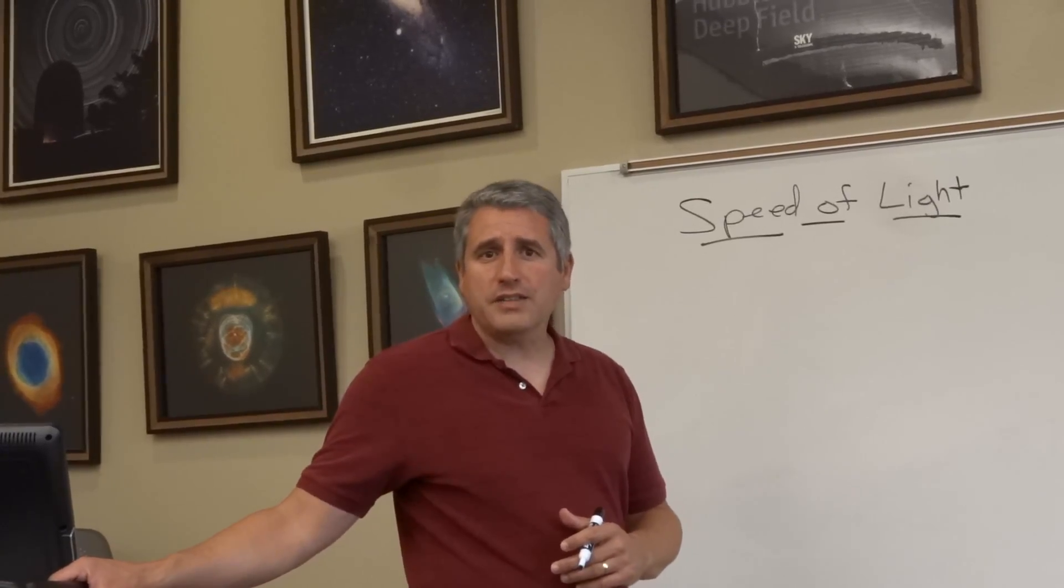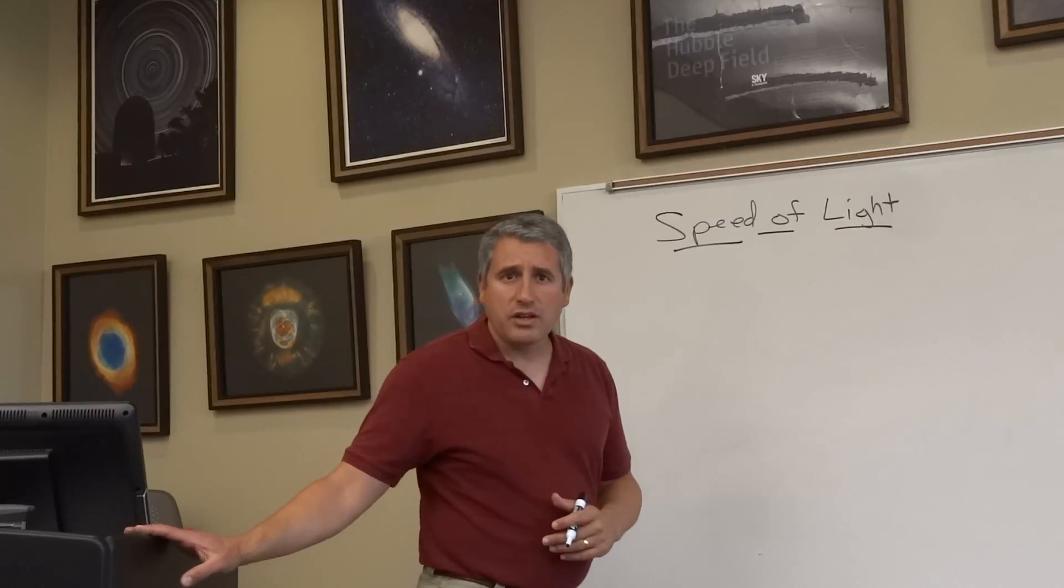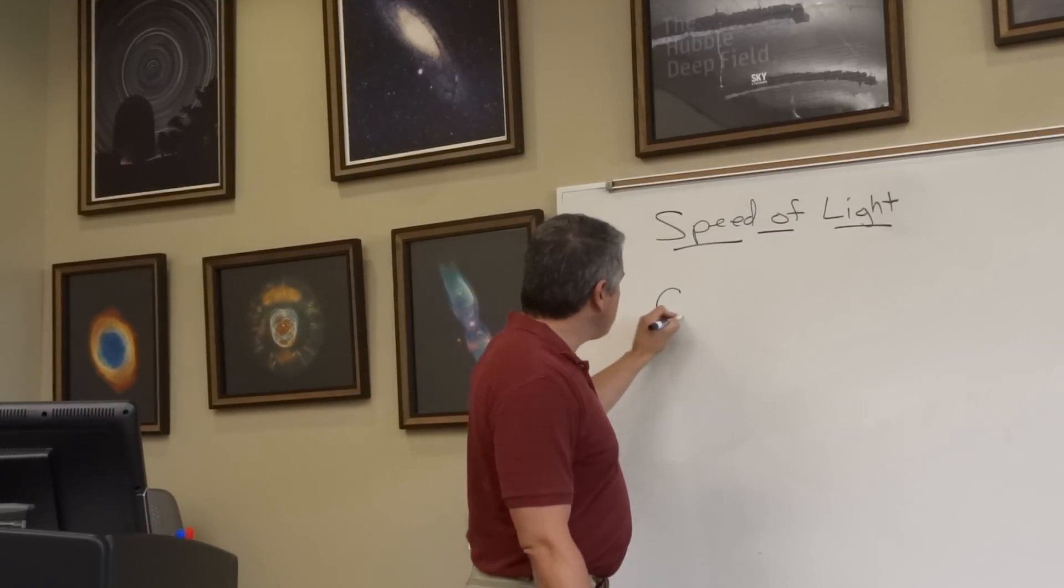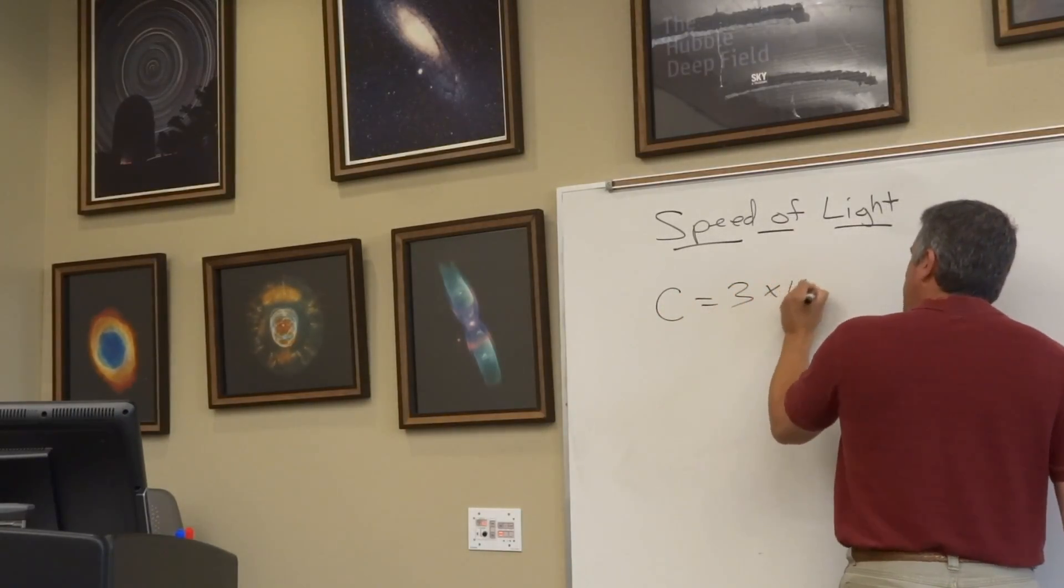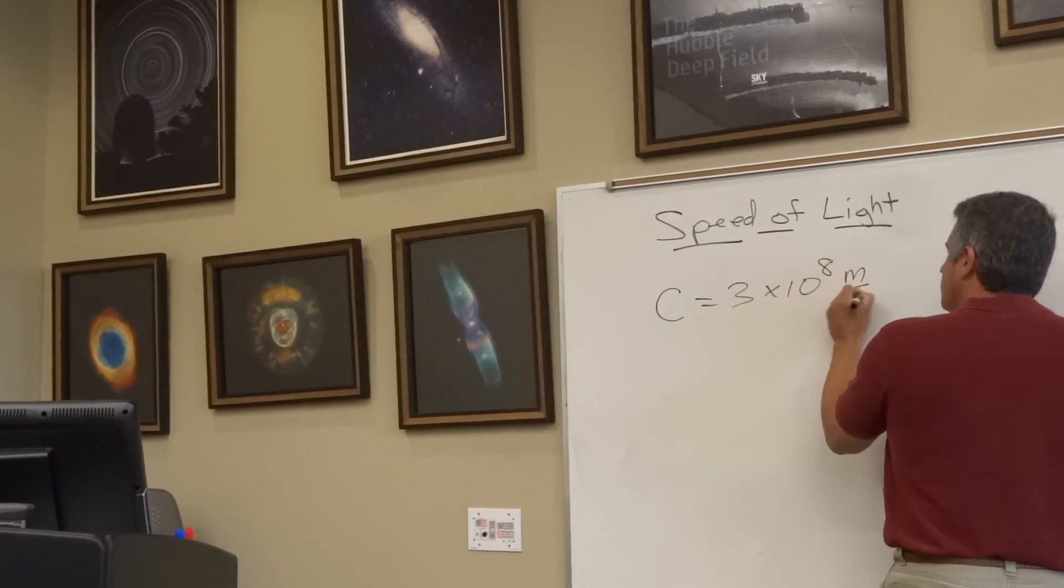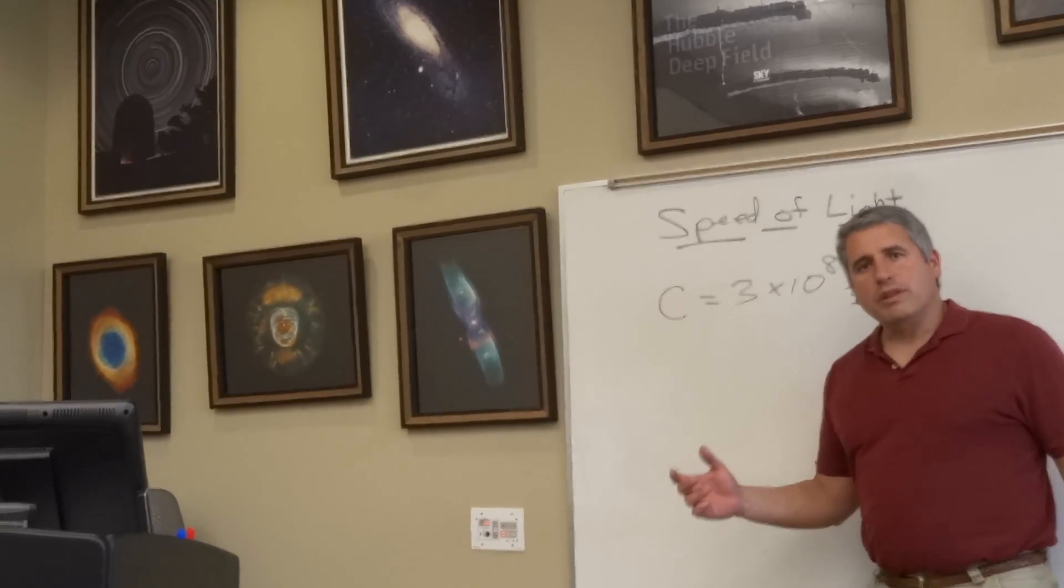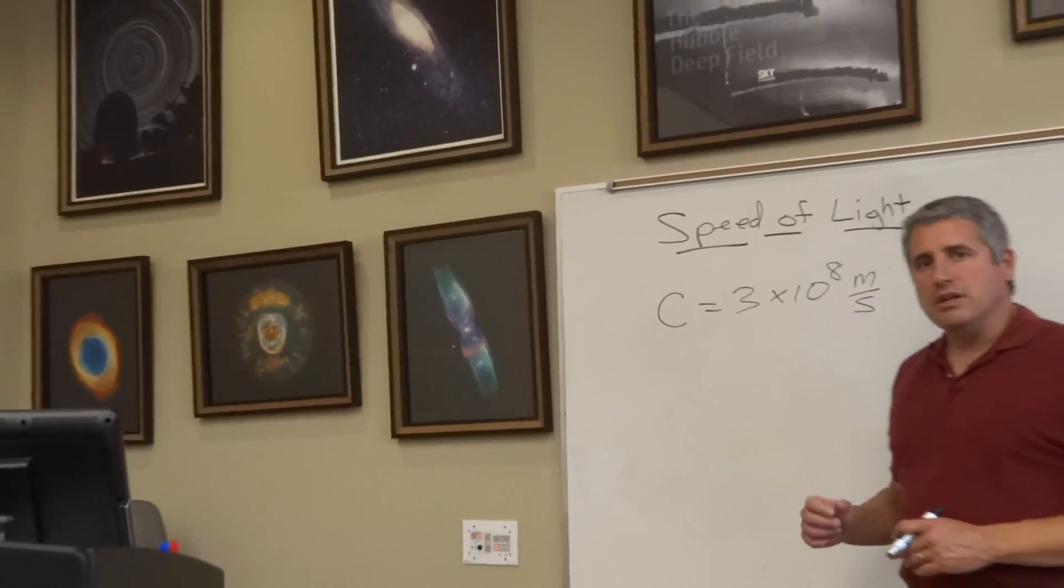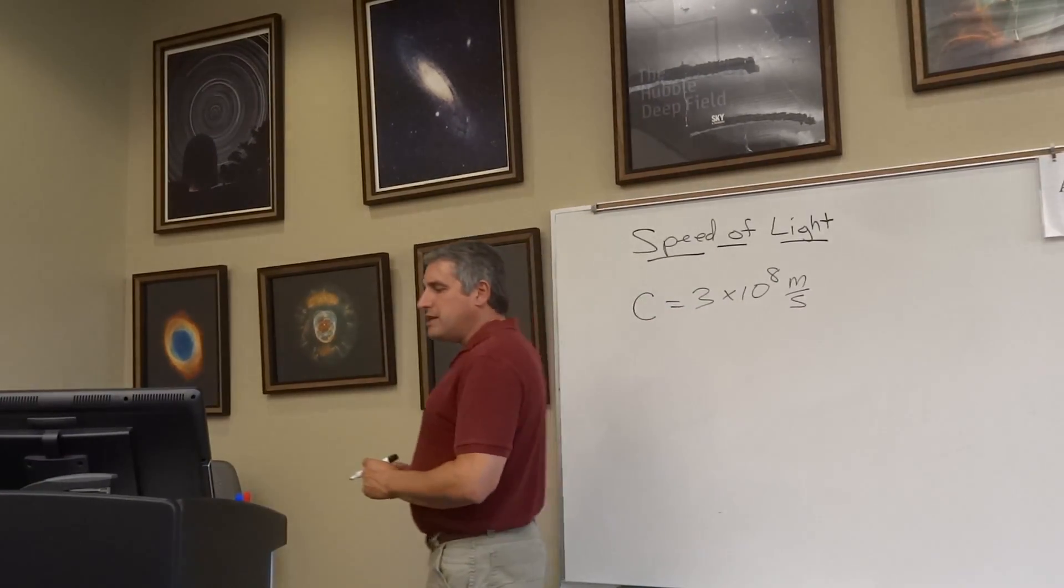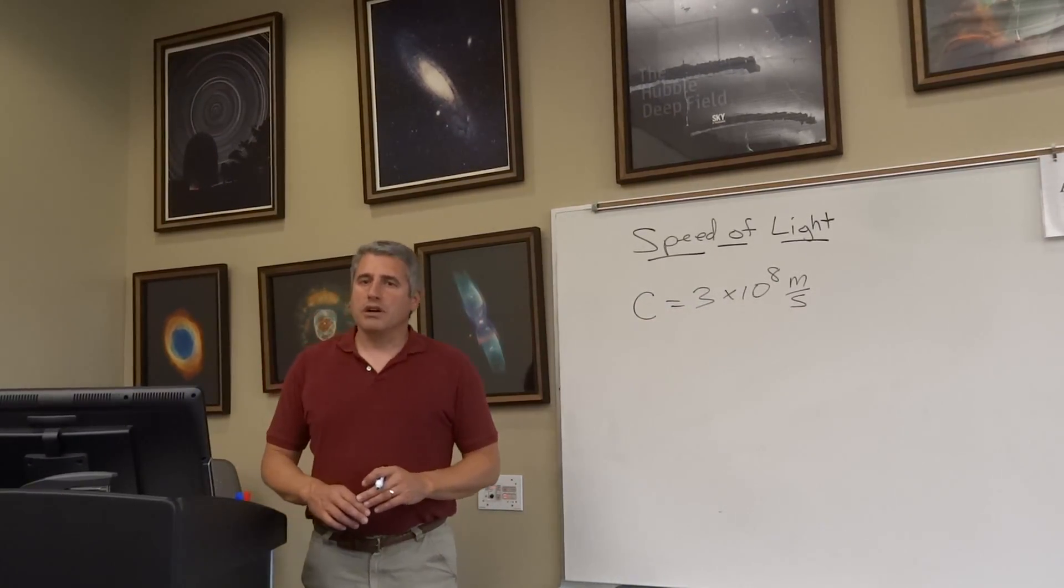In fact, in scientific notation, the speed of light, which we label as C, is 3 times 10 to the 8th meters per second. Pull that out of scientific notation, and that is 300 million meters per second. That is 300,000 kilometers per second.